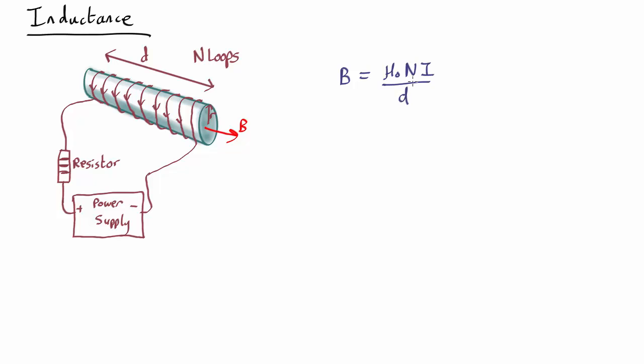Note this is a different equation from what we saw before. Here n is the number of loops, whereas previously n was the number of loops per unit length, which is why we have the over d here.